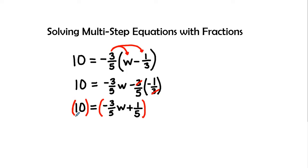So I'm going to multiply both sides by the denominator, or the common denominator, which is five. And so I'm going to multiply both sides by five over one.